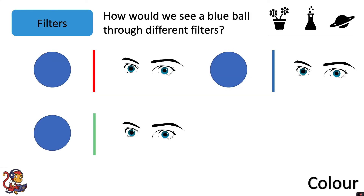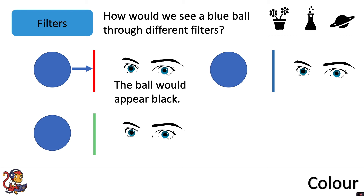Let's have a look at how we would see a blue ball through different filters. How would we see a blue ball through a red filter? The blue ball reflects blue light, but the red filter will only let red light through, so no light will be able to pass through the filter. In this case the ball would appear black.